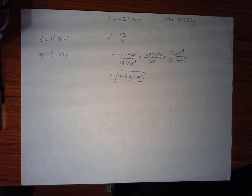Okay, in this problem we're converting density from pounds per cubic inch to grams per cubic centimeter. We're going to need two conversion factors written at the top: one inch equals 2.54 centimeters, and one pound equals 453.59 grams.